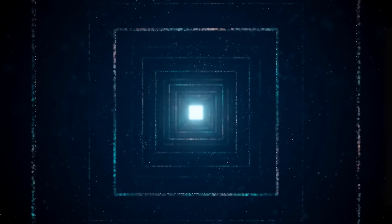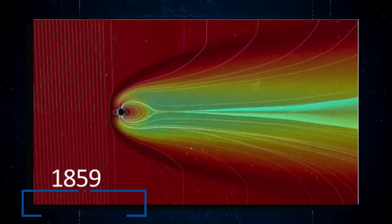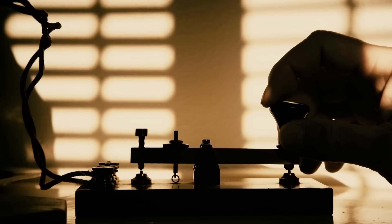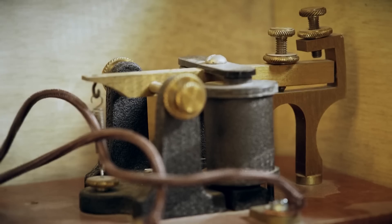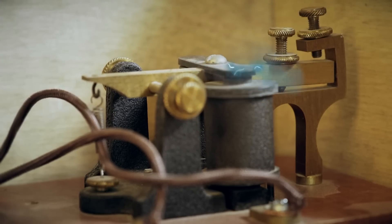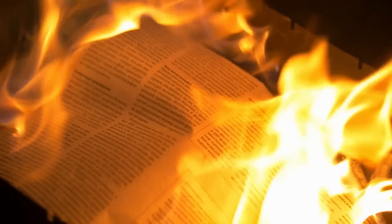For instance, in 1859, the Carrington event affected the global telegraph system, and there were even reports of electric shocks and sparks from telegraph machines resulting in ignited papers.